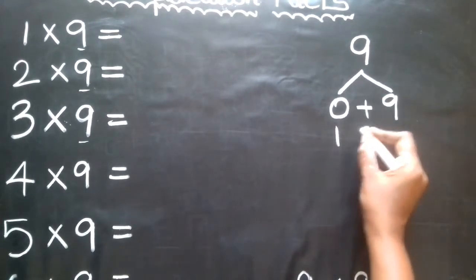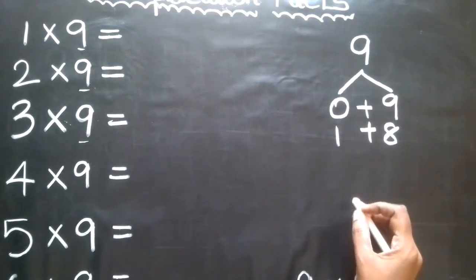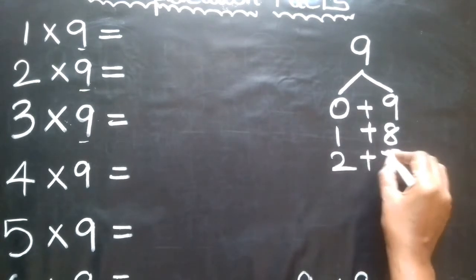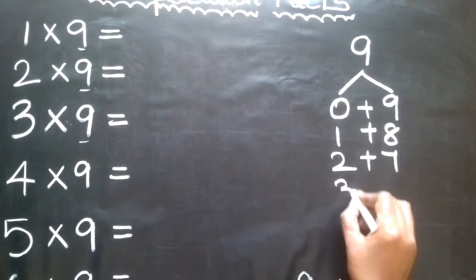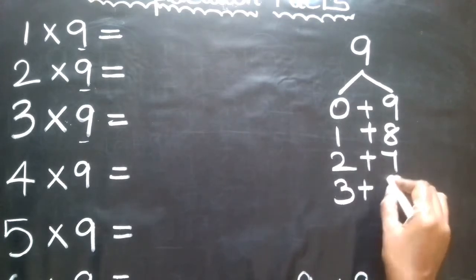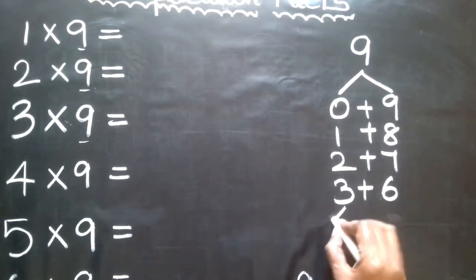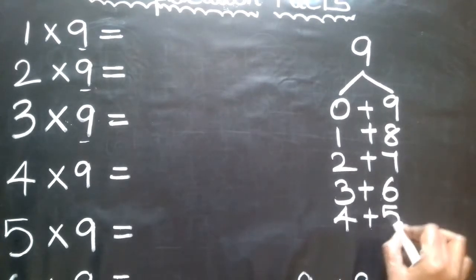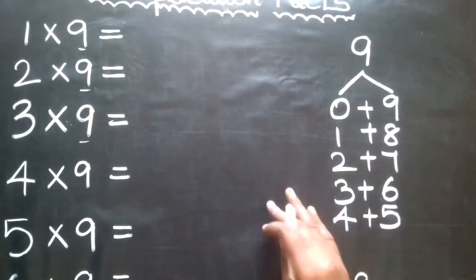Here are the digit pairs that sum to 9: 1 plus 8 is 9; 2 plus 7 is 9; 3 plus 6 is 9; 4 plus 5 is 9.